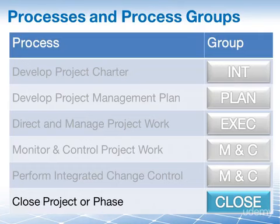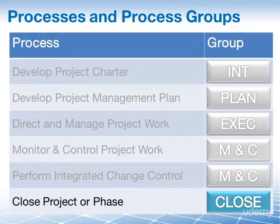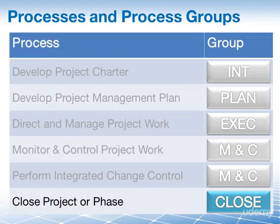Here you see our usual overview — the table that shows you into which process group the individual processes fall. Close Project or Phase is definitely in the closing process group. But do you remember the other process that falls into the closing process group? There are only two processes in the whole PMBOK guide that are in the closing process group. It is the Close Procurements process.